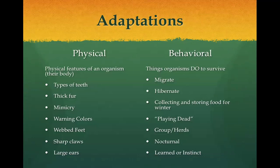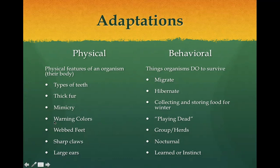Today we're talking about adaptations. Adaptations can be physical or behavioral. A physical adaptation is a physical feature on an organism's body — or for a plant, it's on the outside of the plant. Physical adaptations could be types of teeth, thick fur, mimicry, warning colors, webbed feet, sharp claws, or large ears. Those are all parts of an animal's body, so those would be considered physical adaptations.